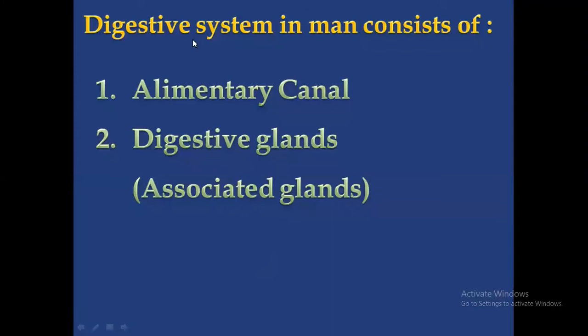The digestive system consists of two parts. One is the alimentary canal and another one is digestive glands. Those digestive glands are also called associated glands.